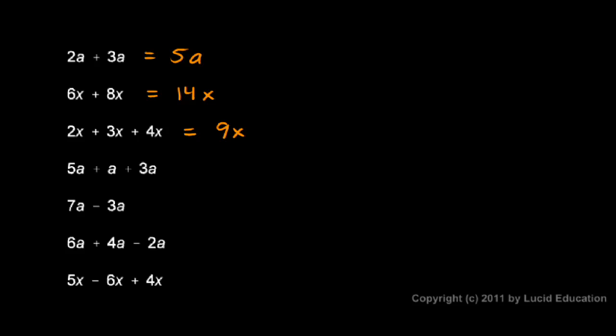Now this one, 5a plus a plus 3a. 5a plus a, this a right here, remember that's the same as 1a. We don't typically see the 1 written right there, but a by itself is the same as 1 times a. So 5a plus a gives me 6a, plus 3 more a's gives me a total of 9a.